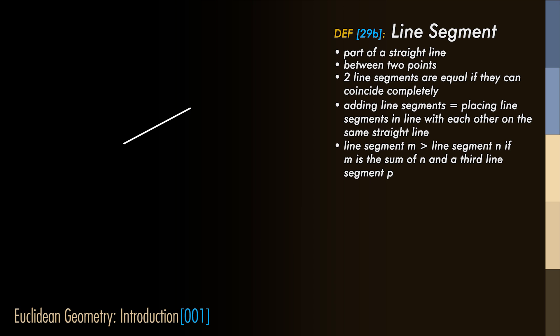Now, let's continue by naming some planar objects. A line segment is the part of a straight line between two points. Two line segments are equal if they can coincide completely. Adding two line segments together is the same as placing one line segment in line with the other. The sum of two line segments on the same straight line is the segment connecting the end points. A line segment is larger than a second line segment if it is the sum of that second line segment than a third one. And so we call the second line segment smaller than the first one.